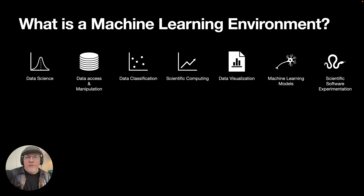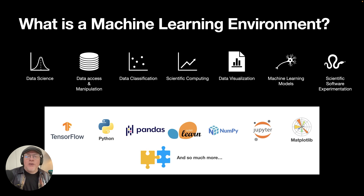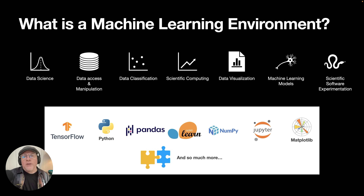One of the things that these environments will require is that you'll probably want to collect data, analyze data, and classify data. To do that, you're going to use a specific set of tools — and there are many more out there, but I'm just listing a few. For example, there's Python, which is a common programming language that most machine learning and AI projects use. There's also TensorFlow, NumPy, and Matplotlib. These are all standard technologies you're going to find every machine learning project requires. That's what I'm going to call a machine learning environment.